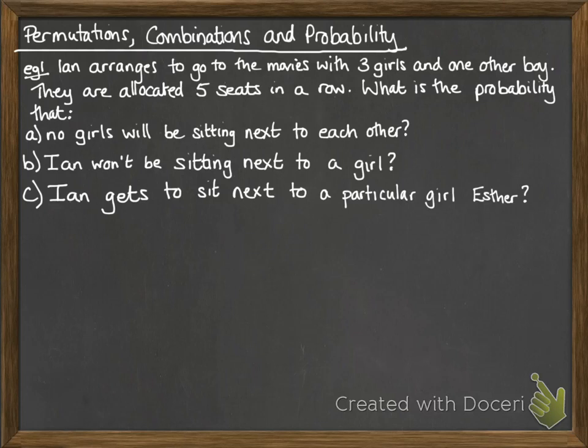For the first one — no girls sitting next to each other — we'll need the total arrangements to answer any probability questions. Without any restrictions, five people in a row would be five factorial, so that's 120.